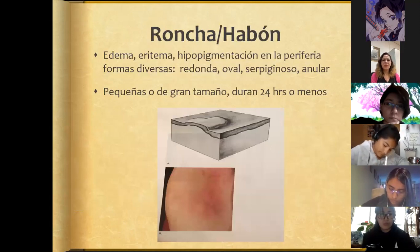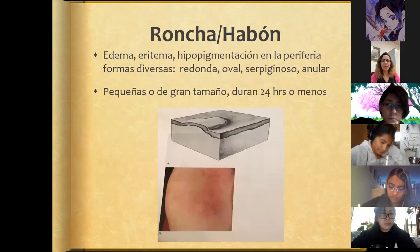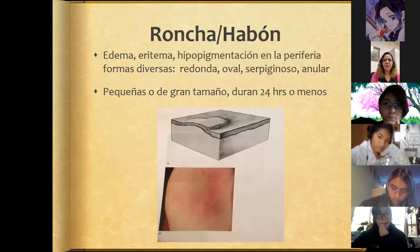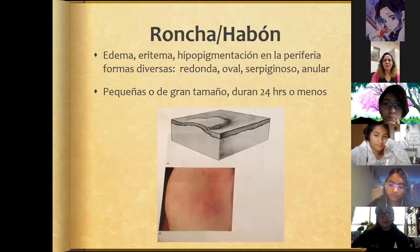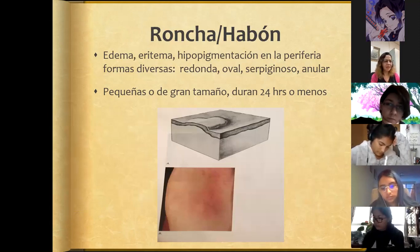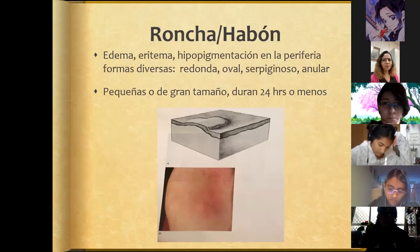A wheal, or hive, is a well-demarcated increased volume that has an edematous appearance, giving it the look of an orange peel. It always has a swollen, reddened appearance, though some wheals have a hypopigmented periphery. They can have diverse forms — mostly round, but also oval, serpiginous, or annular — and can appear where clothing is tight or in areas of friction. They can be small or large and last 24 hours or less, which is their main characteristic.